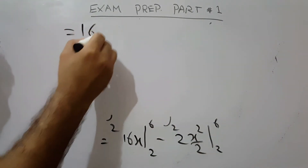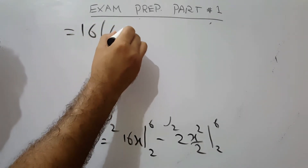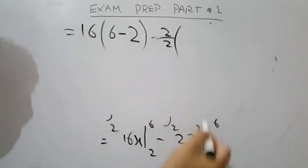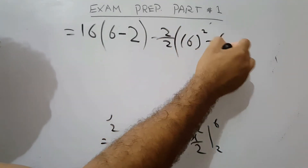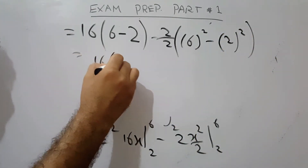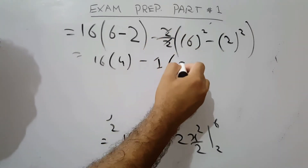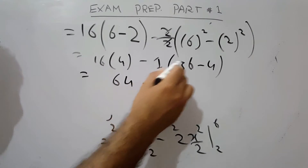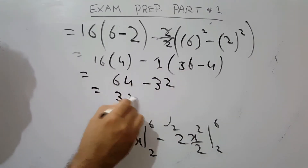Apply the limits: 16 times 6 minus 2 over 2 times 6 squared, minus 16 times 2 minus 2 over 2 times 2 squared. This gives 96 minus 36 minus 32 plus 4. Simplifying: 64 minus 32 equals 32. The area under the curve is 32.